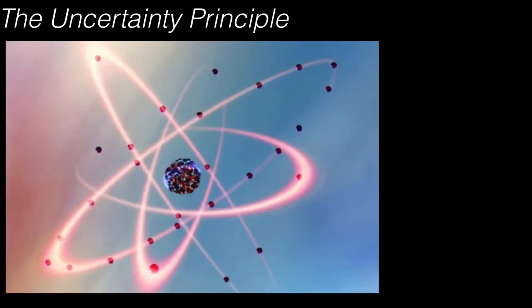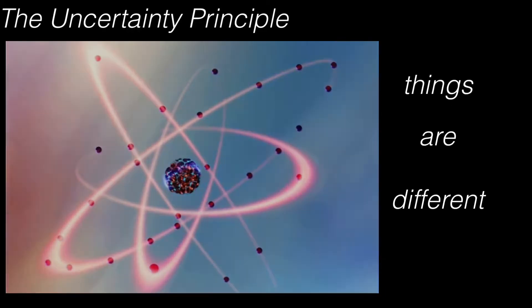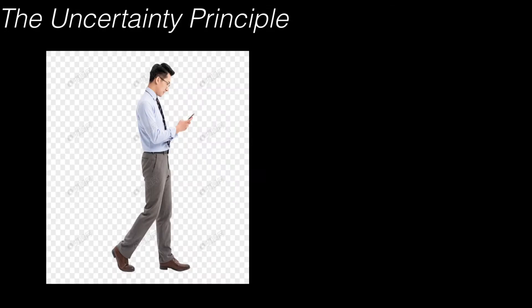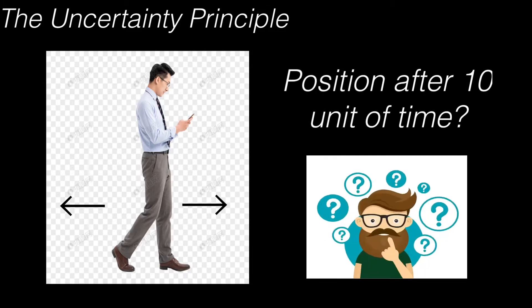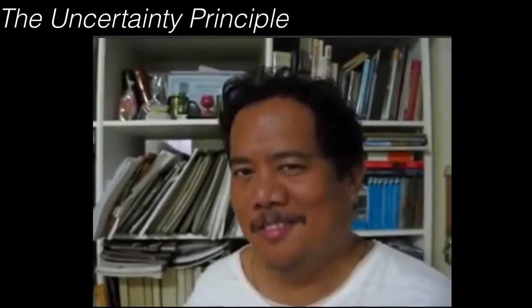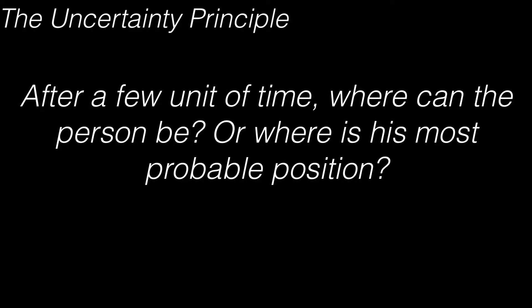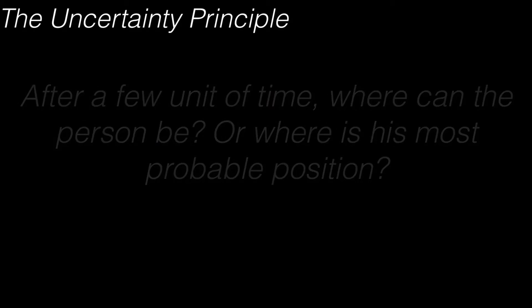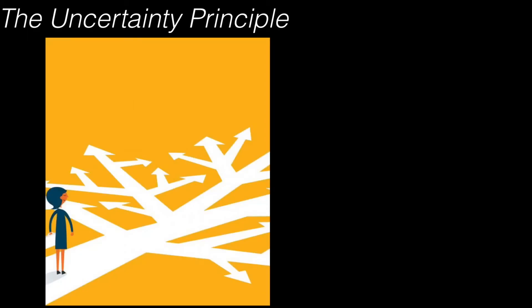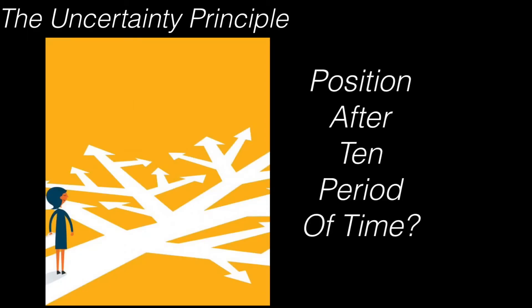But in quantum mechanics, things are a little bit different. The question will be changed to something like, if a person takes a step after a unit of time, either forward or backward, where the person can be after 10 units of time. The scenario changes quite a bit. When you're talking about quantum mechanics, the question will become something like, after a few units of time, where can he be or where he's most probably going to be? Because there's no fixed answer on where the person can be after 10 units of time.